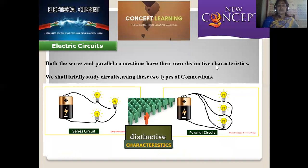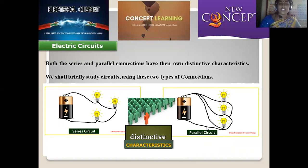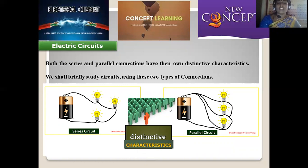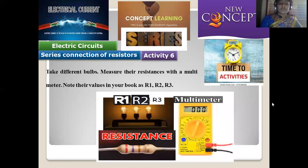Both the series and parallel connections have their own distinctive characteristics. Both are individual to each other and have distinct properties — they are not exactly the same. The voltage discharged from the series circuit is not exactly similar to that of the parallel circuit, and both are easily distinguished from each other. When taking a battery, all the cells are connected in series rather than in parallel lines. Series kind of connection will be more effective compared to the parallel kind.